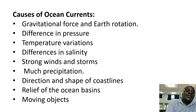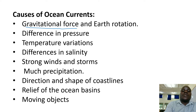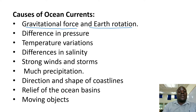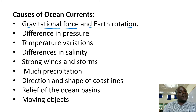Number one is gravitational force and Earth's rotation. As the Earth rotates on its axis under the influence of gravitational force, it also has an influence on seas and oceans, and therefore that's why we have cold ocean currents and warm ocean currents moving on seas and oceans.